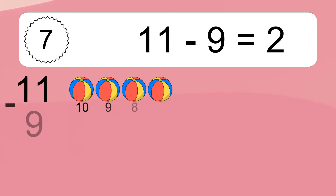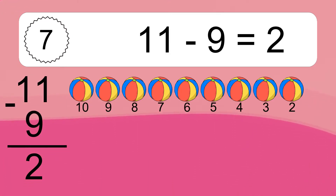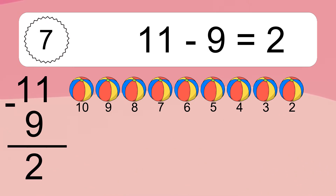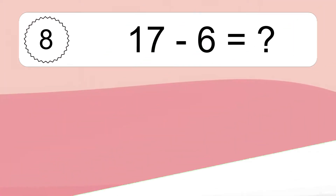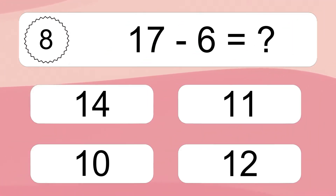11 minus 9 equals what? 11 minus 9 equals 2. Let's count it: 10, 9, 8, 7, 6, 5, 4, 3, 2.